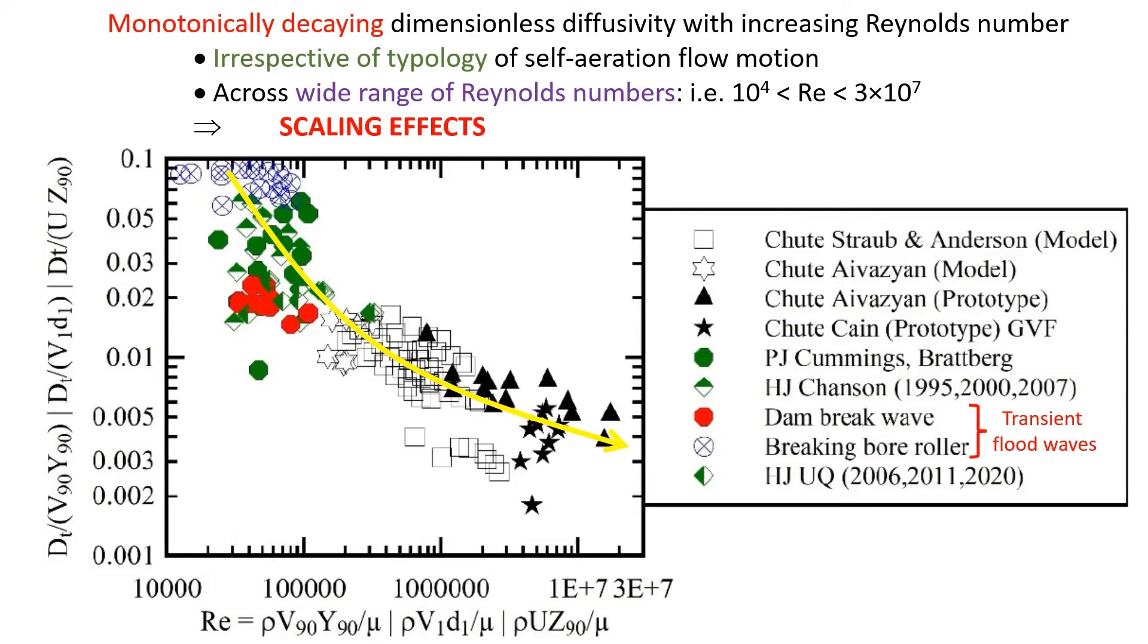This is across a very wide range of Reynolds numbers, implying that extrapolation of small size laboratory data to large full-scale data will be affected by scaling effects.